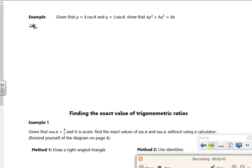Right, so the only equation I've got which links sin and cos is sin² θ plus cos² θ is 1. Now if p is 3 cos θ, then p over 3 is cos θ. And if q is 2 sin θ, then q over 2 is sin θ. I'm doing this because it's the only thing I know. I only know that sin² plus cos² is 1.